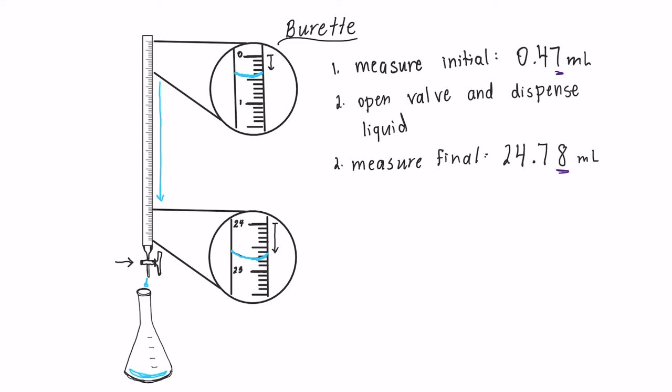Now we want to find the total volume that we added into the flask, which will be the final volume minus the initial volume. 24.78 milliliters minus 0.47 milliliters equals 24.31 milliliters. Our uncertain digit is still in the second decimal place, so our total volume has four significant figures.